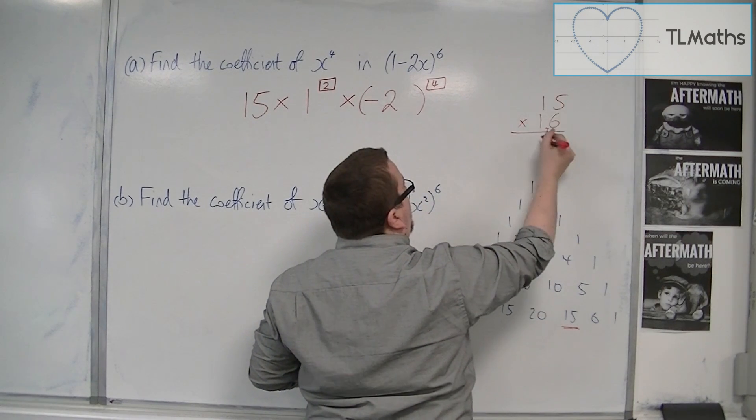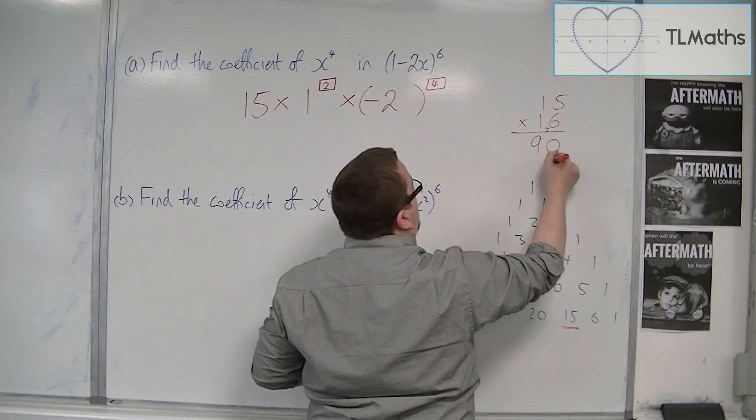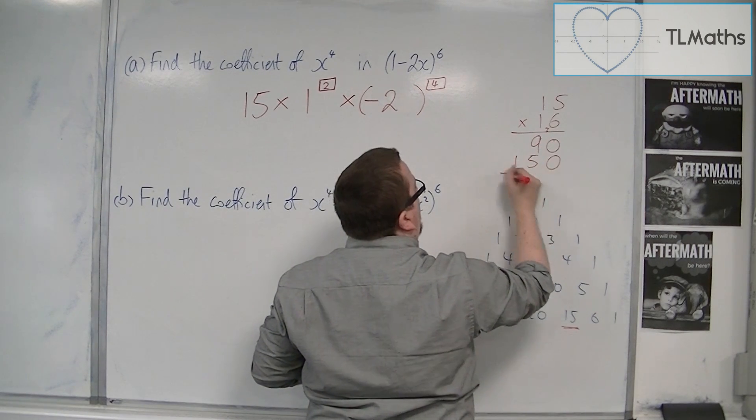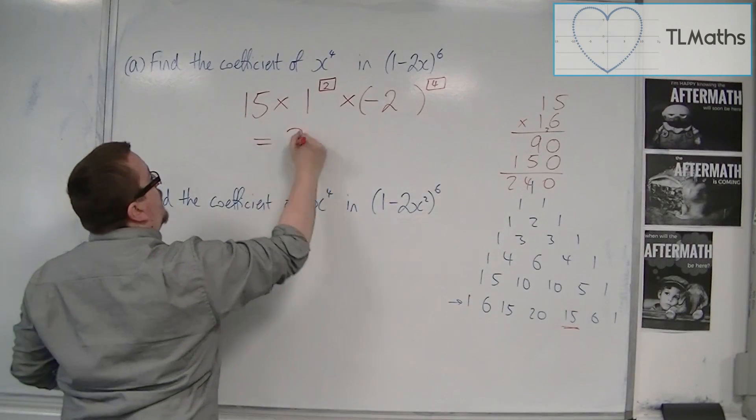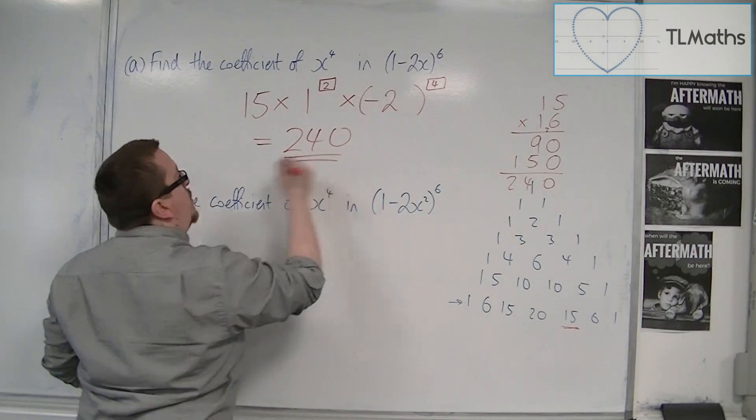So 5, 6 are 30. 1, 6, and then 3 is 9. So 0, 5, 1. So we're going to have 240. So the coefficient is 240.